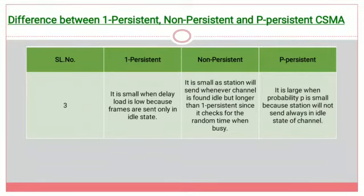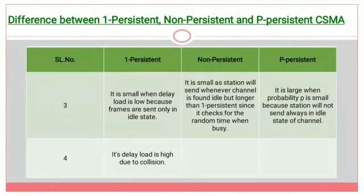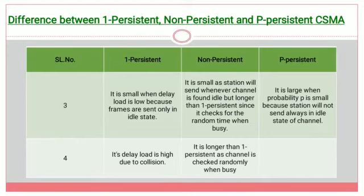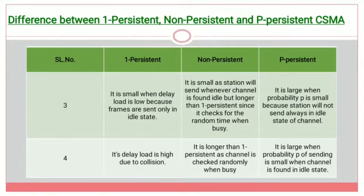In p persistent, the delay is large when probability p is small, because the station will not always send in the idle state of the channel. In one persistent, the delay under high load is high due to the higher number of collisions. In non persistent, it is longer than one persistent as the channel is checked randomly when busy. In p persistent, the delay is large when the probability p of sending is small when the channel is found idle, resulting in higher delay load.